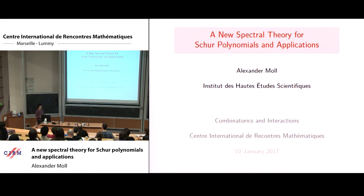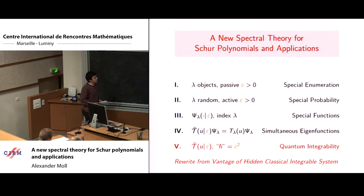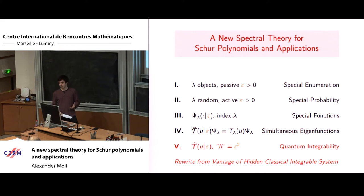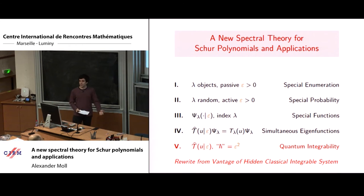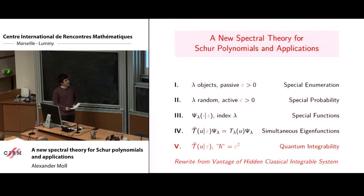Just before we get started with the specific theory of Schur polynomials, let me give a roadmap for what I have in mind. Say lambda is some object — it could be a combinatorial object, or an object from a geometric or analytic theory. You want to say this object has some special enumerative properties: maybe the counts satisfy beautiful identities, or you have some mysterious bijections, and we want to know why those things occur. One way to get a feel for your objects is to choose a probability measure on them, and what you'll find is that not only are your objects special, but sometimes there are special measures as well.